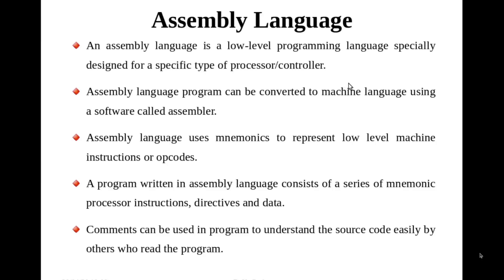If we write the program in assembly language, we require an intermediator which will take assembly language as input and produce machine codes. That intermediator which converts assembly language to machine language is called the assembler. Assembly language uses mnemonics to represent low-level machine instructions. These machine instructions are also called opcodes — like MOV, ADD, SUB. Such codes are called mnemonics.